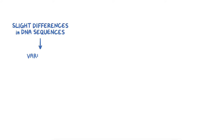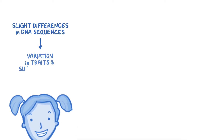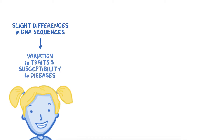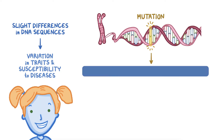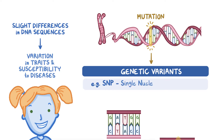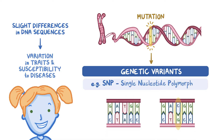Slight differences in DNA sequences account for some of the variation seen in human traits and susceptibility to certain diseases. Changes in the DNA sequence are caused by mutation and are called genetic variants. Variants can be as small as a single nucleotide, referred to as a SNP, or single nucleotide polymorphism.